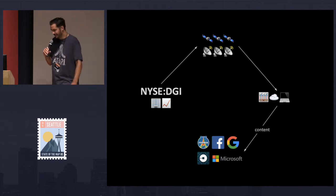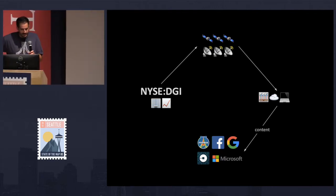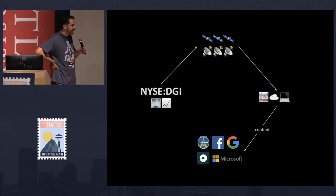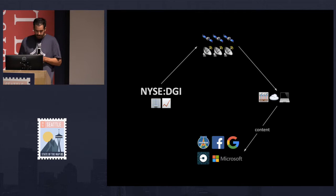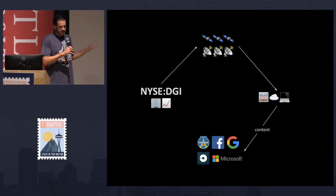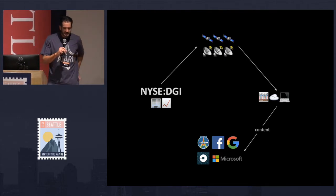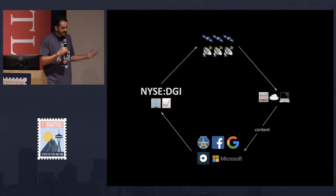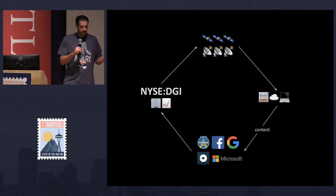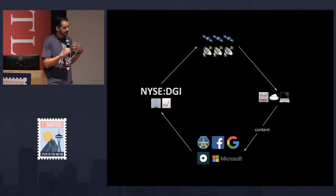We're licensing data to the government and to companies like Mapbox and Microsoft, who license our content and publish it into iD editor, JOSM, and all the tools we use — that's where you're getting your imagery from. If you meet someone from Mapbox or Microsoft today, buy them a coffee, because that's how we as editors of OpenStreetMap get access to a world full of satellite imagery. They pay us fees, we take that money and build more satellites. Satellites have a mission life of about seven or eight years, so we're building new ones to replenish.